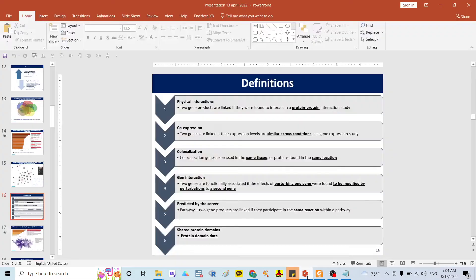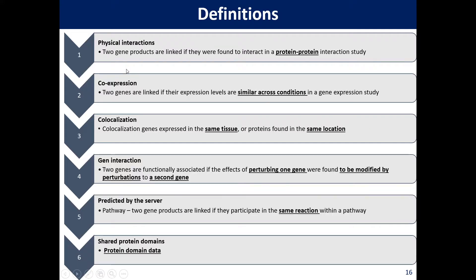I also prepared the definitions of these interaction types. Physical interaction means two genes produce a link if their proteins are bound — i.e., protein-protein interaction. Co-expression means two genes are linked if their expression levels are similar across conditions in gene expression data. I will push the full definitions in the comment below.